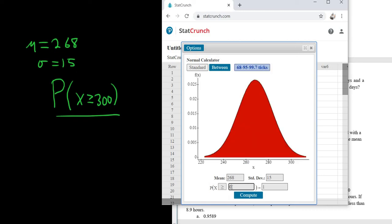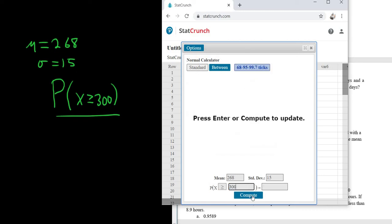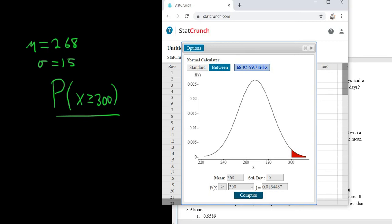You want at least 300. Just like that. Boom. 0.0164.